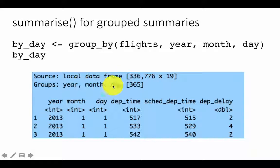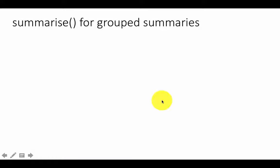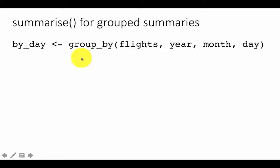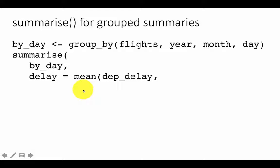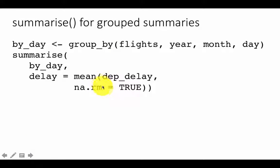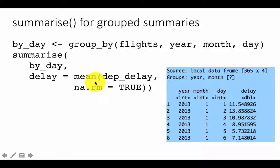There are 365 distinct combinations of month and day. Now we can take that 'by_day' table and summarize it. We say: summarize 'by_day', delay equals mean departure delay, na.rm equals TRUE. We have to include na.rm because there are some unknown values — if you find NAs and calculate the mean without removing them, you will get NA as the result. So that is why we set na.rm to TRUE. When you do this, you get one summary for every day.